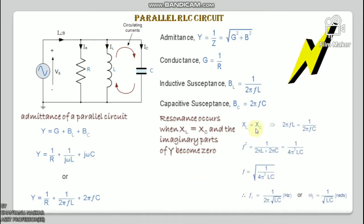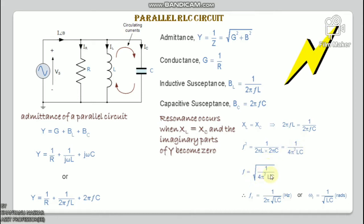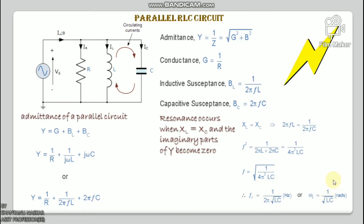At resonance XL = XC, so 2πfL = 1/(2πfC), giving f² = 1/(4π²LC). Therefore the resonant frequency fr = 1/(2π√LC) hertz, or ωr = 1/√LC radians per second. Notice that at resonance the parallel circuit produces the same equation as for the series resonance circuit — it makes no difference whether the inductor and capacitor are connected in parallel or series.